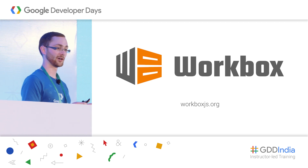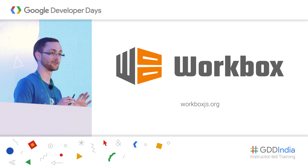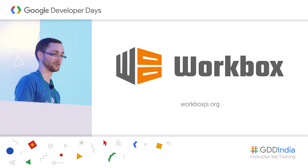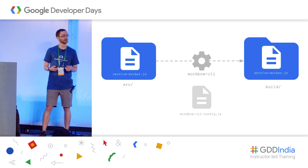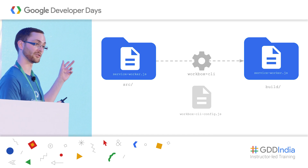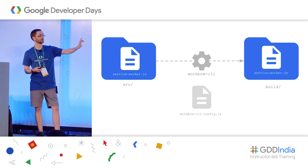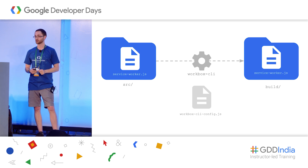Workbox is the solution. At the simplest level, Workbox is a better way to make service workers. I think of it as two parts: first, a library that abstracts common patterns you would implement yourself in the service worker; and second, it allows you to make service workers part of your build process. Rather than writing a service worker by hand, you write a source service worker, have a configuration file, and Workbox uses that to generate a production service worker for you.